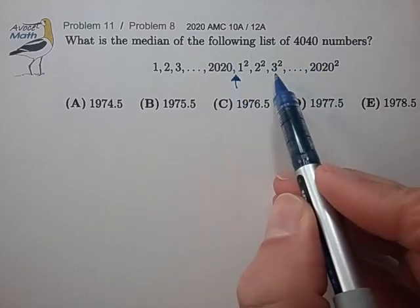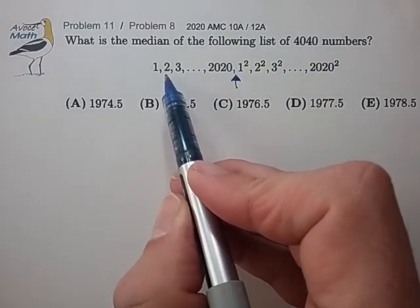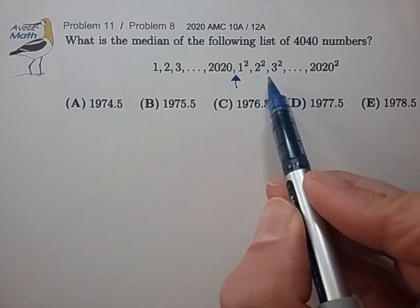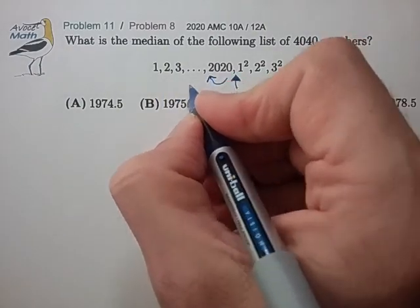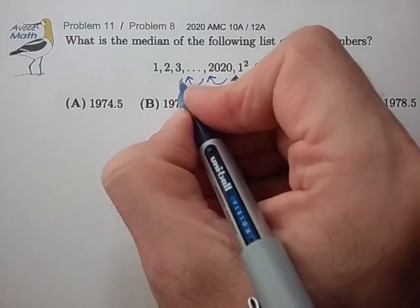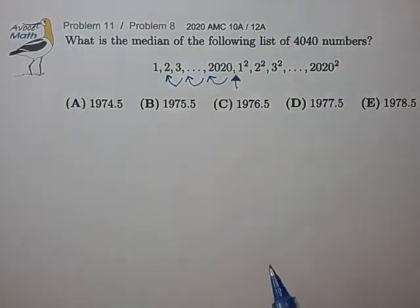So some of these squares are going to be below 2020, and for each square that's below 2020, that's going to push the median down by one slot. That's kind of how I'm conceptualizing this problem.